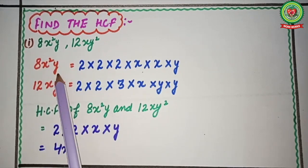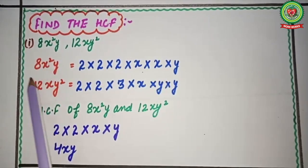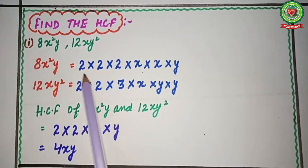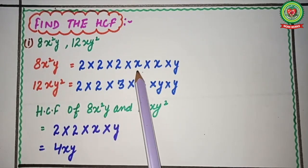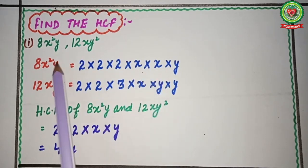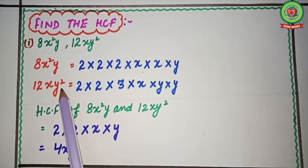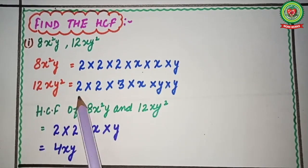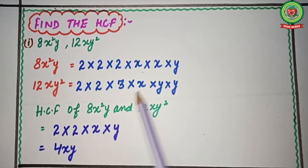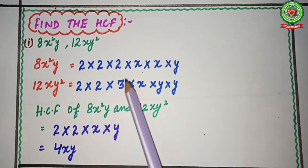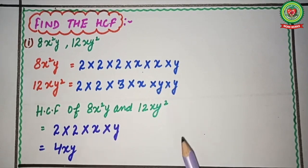The factors of 8 are 2 × 2 × 2, and x² means we write x two times: x × x, multiplied by y. Next, 12xy²: factors of 12 are 2 × 2 × 3, multiplied by x, and y² means y × y.